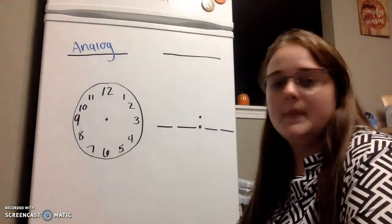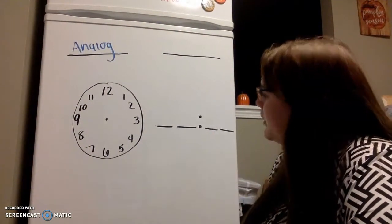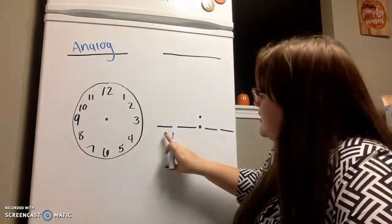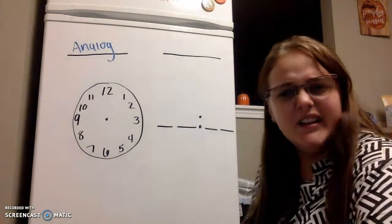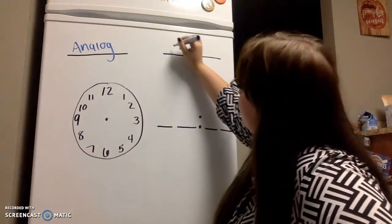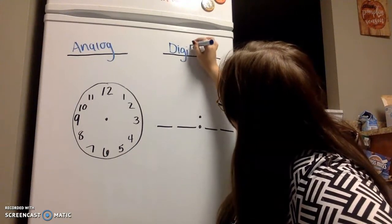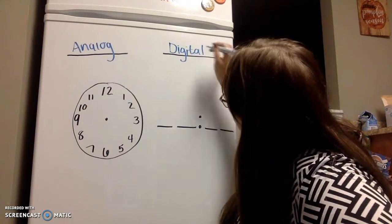What about this one? What's this funny little thing in there? That we call a colon. So what kind of clock has a colon in it? What kind of clock would be our digital clock.